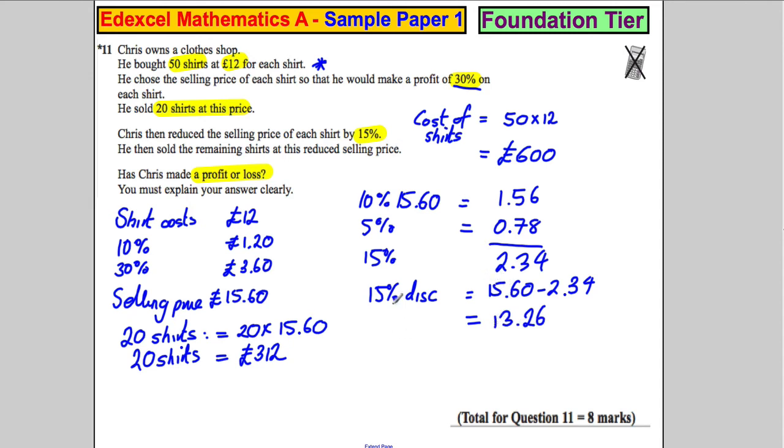So he sold the remaining at that amount, so he sold the remaining 30 at that. So 10 of these would be £132.60.